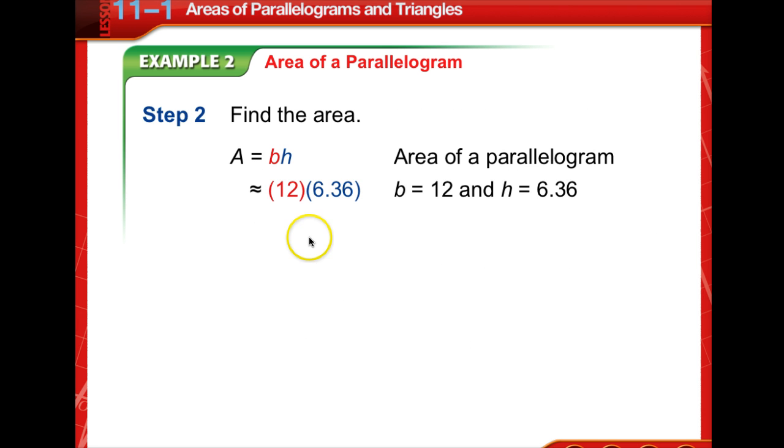To find the area, we know that base was 12, we've got our height, and we do the multiplication. So the area is approximately equal to 76.3 square units.